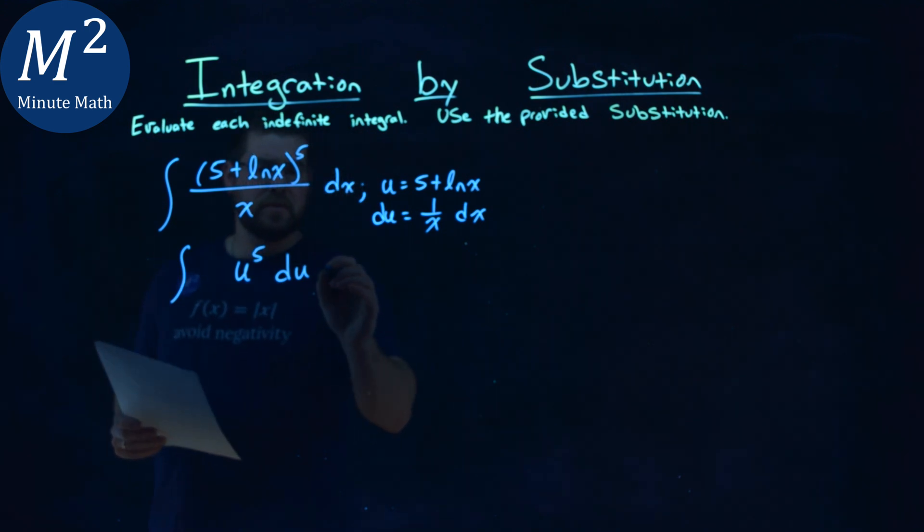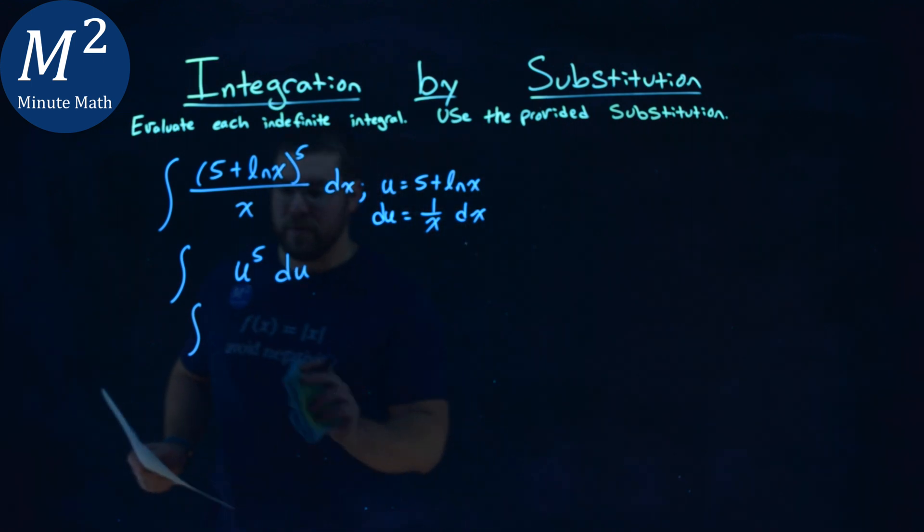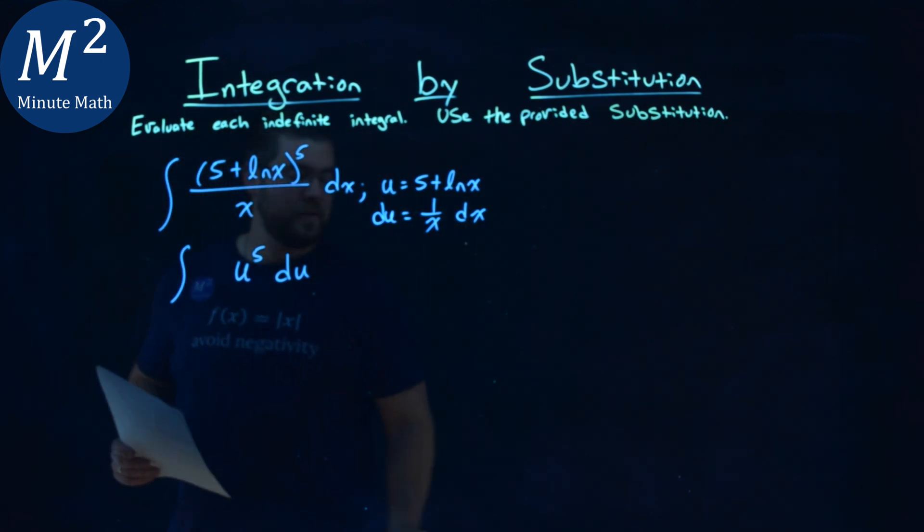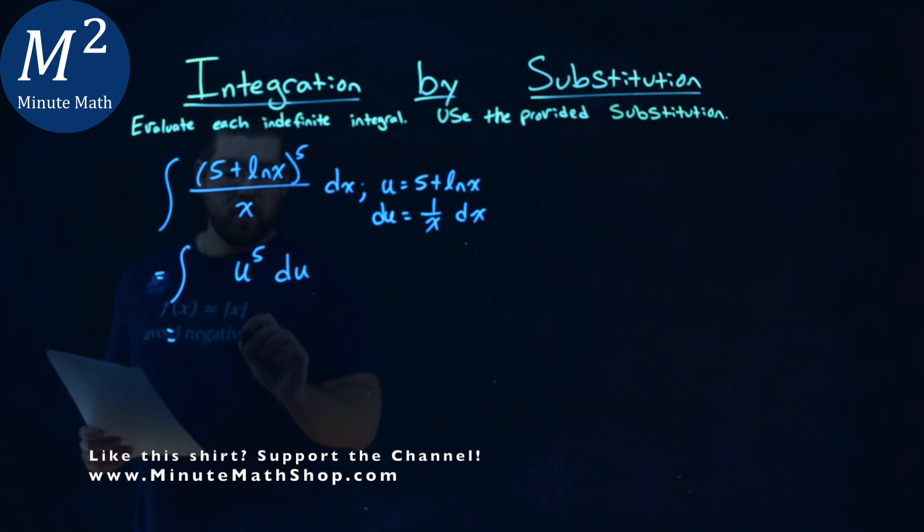So we take the integral. We raise the exponent by one, so we have u to the sixth power. And to counteract that, we have 1/6 out front, and then we have the plus c.